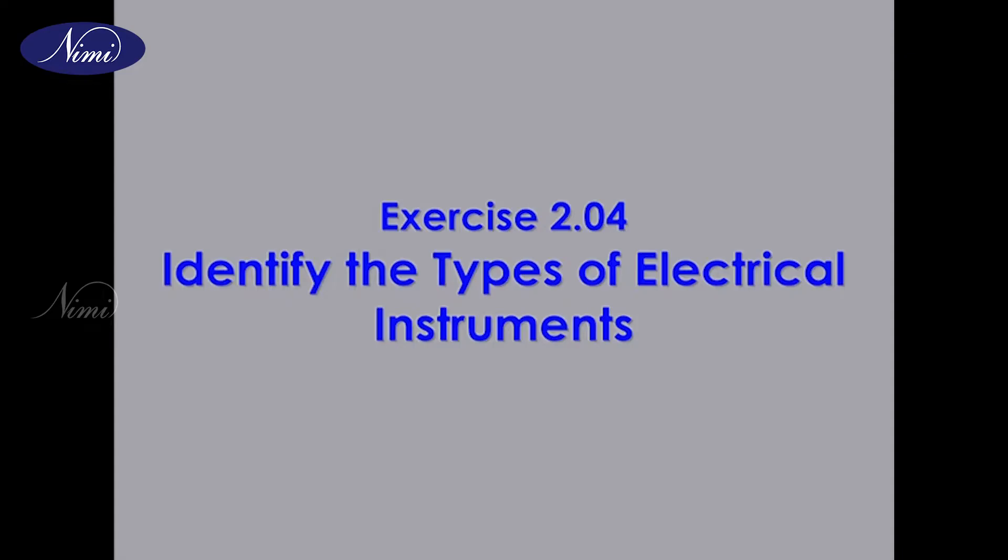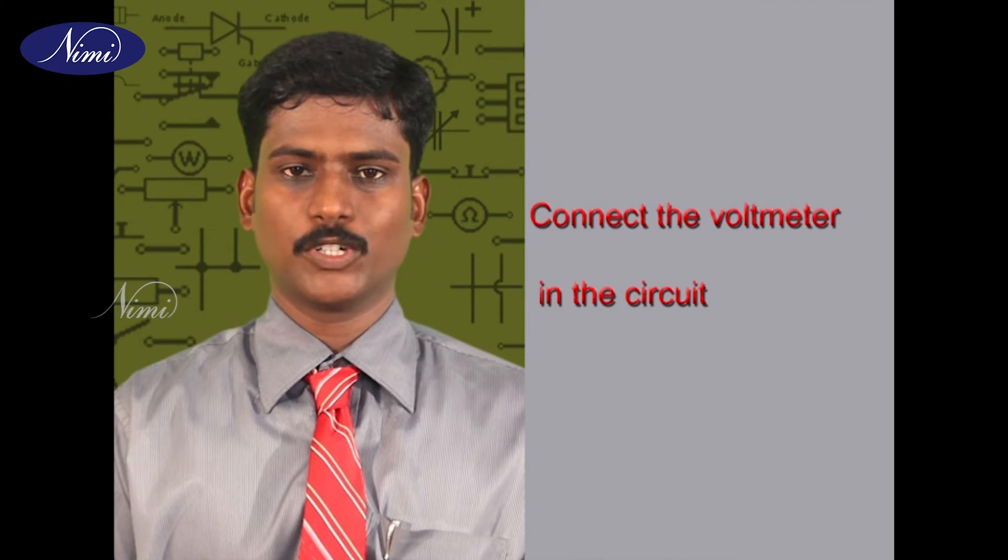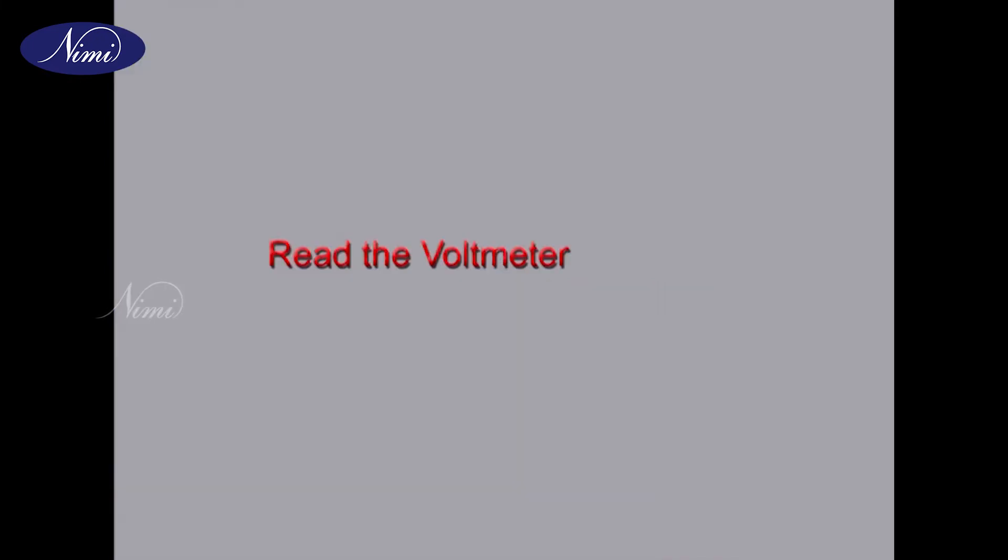Exercise 2.04: Identify the types of electrical instruments. Skill sequence one: Determine the relationship between voltage, current, and resistance in a DC circuit. Dear students, this lesson will help you to connect the voltmeter in the circuit, read the voltmeter.